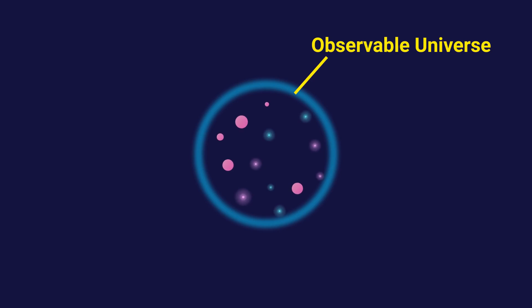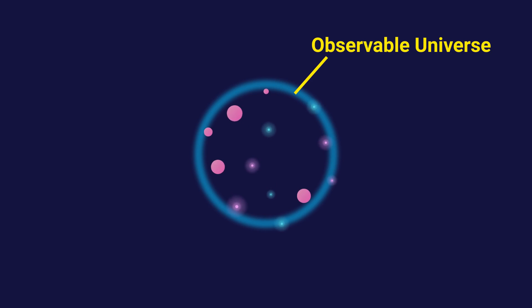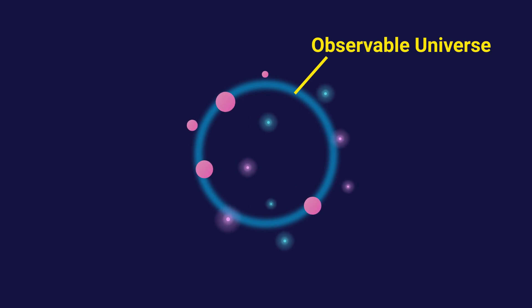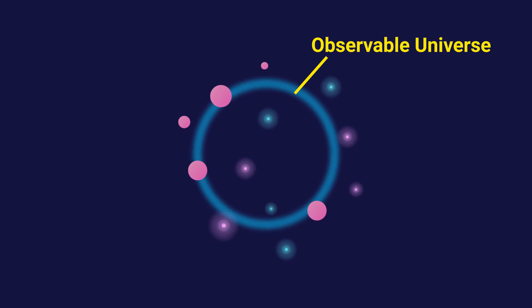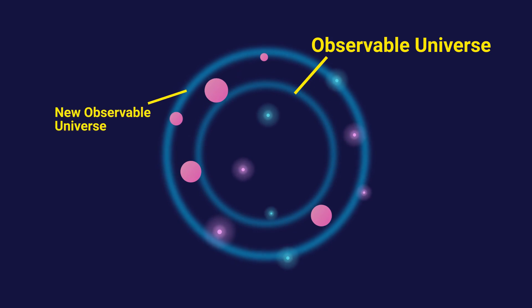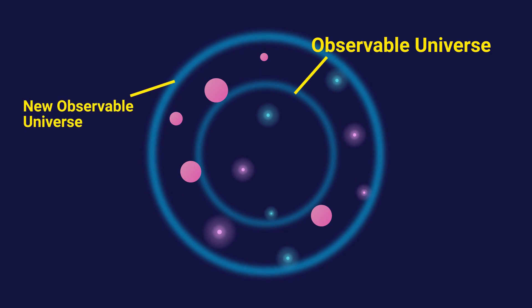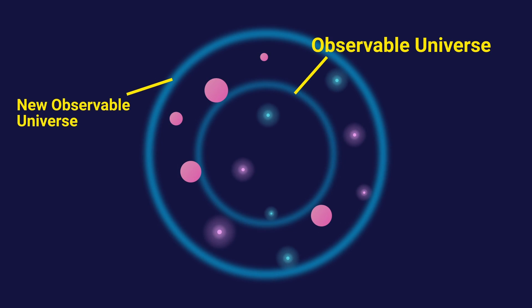I used to think that an expanding universe meant our universe is just all this stuff out there, and the convex hull enclosing it gets larger as stuff moves into an empty void. That is not correct. In fact, the stuff of our universe isn't moving through space at all — it's moving with space.